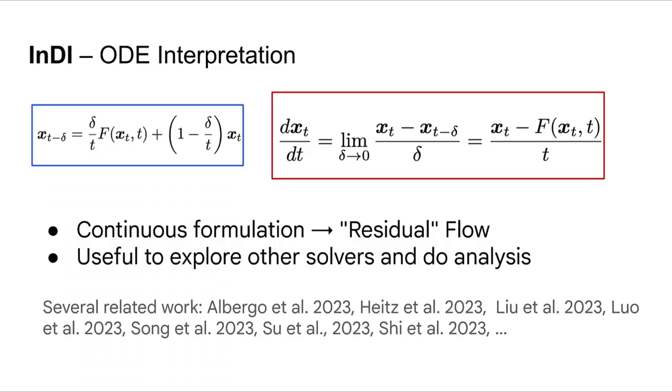We can take INDI's update rule to a limit and let delta, the step, be very small, close to zero. This leads to a continuous INDI formulation through an ODE. The ODE is quite simple. It's sort of a weighted residual flow where we evolve the image in the direction of the residual given by f, or in the ideal case, the posterior mean.